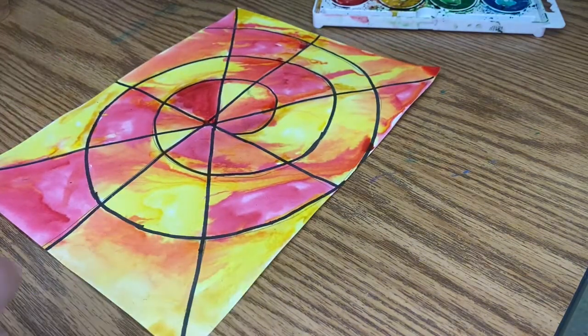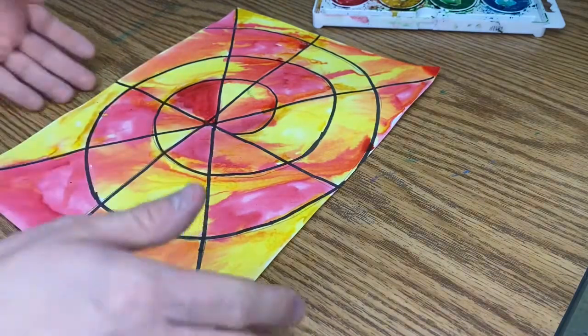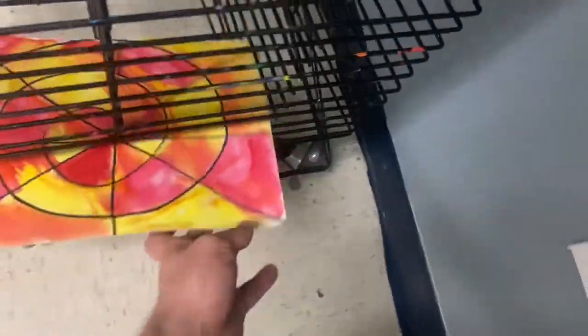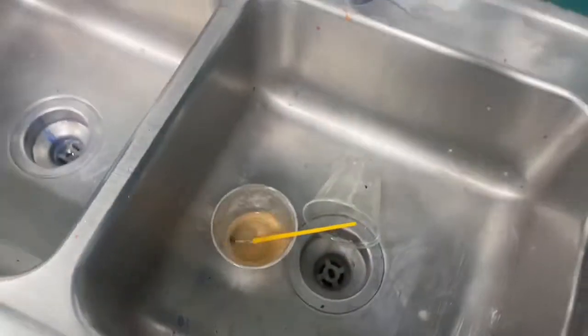When you're done with this, you're going to put it on the drying rack, whether it's wet or dry. Just make sure you show me so I know you're done and you can move on to a new activity. Art goes on the drying rack on the bottom. Paint tray is closed and put back. Water cup goes in the sink. Paintbrush you can just leave in there.